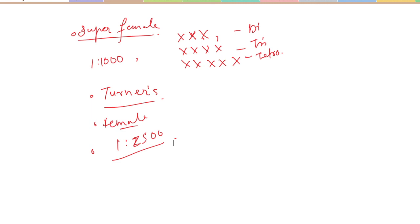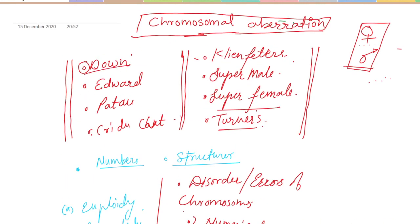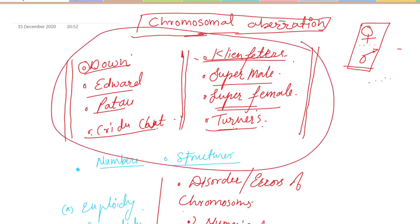Turner syndrome patients are sexually sterile but may be sexually fit. The vagina may be small, and surgical methods can widen the reproductive organ so the patient can enjoy sexual life but is unable to conceive. Mental retardation, learning problems, behavioral problems, and understanding problems may also be present. In summary, this lecture covered Down, Edwards, Patau, Cri-du-chat syndromes, along with Klinefelter, super male, super female, and Turner syndromes — each of which may appear in exams.